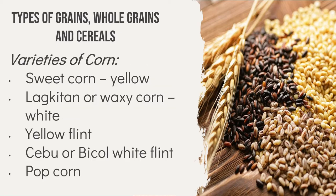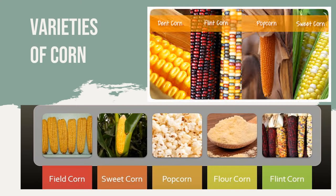The varieties of corn include sweet corn (yellow), lagkitan or waxy corn (white), yellow flint, Cebu or Visayas white flint, and popcorn. Corn is a plant that grows long ears of kernels on tall grass-like stalks. The different types of corn visible on the image are dent corn, flint corn, popcorn, sweet corn, grilled corn, and flour corn.